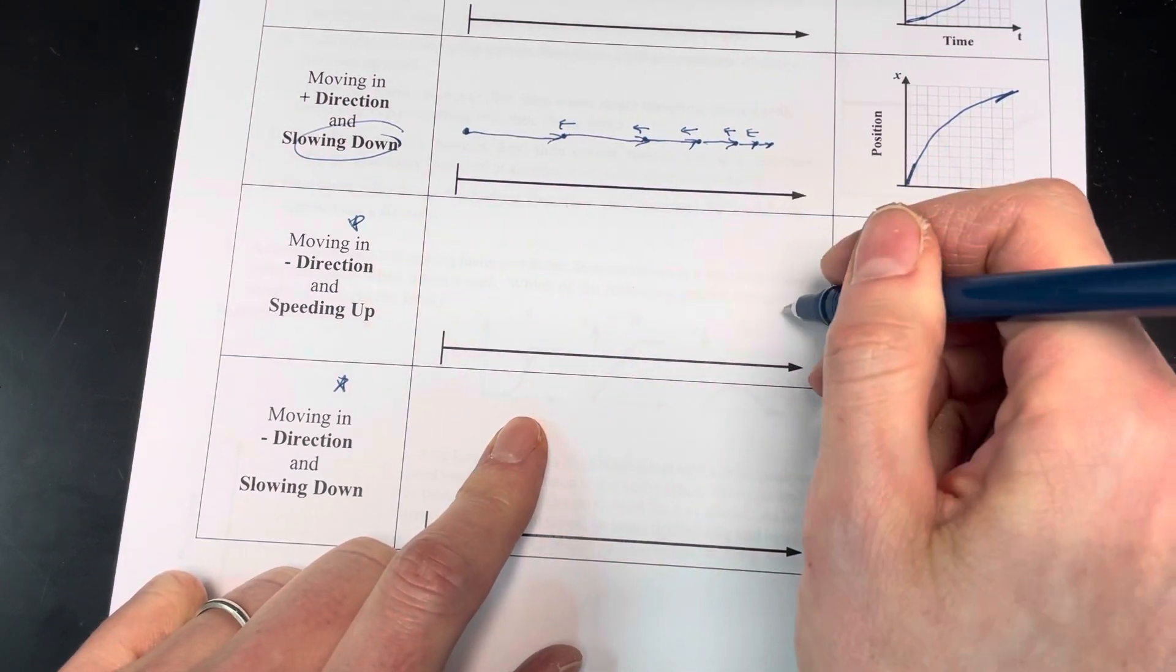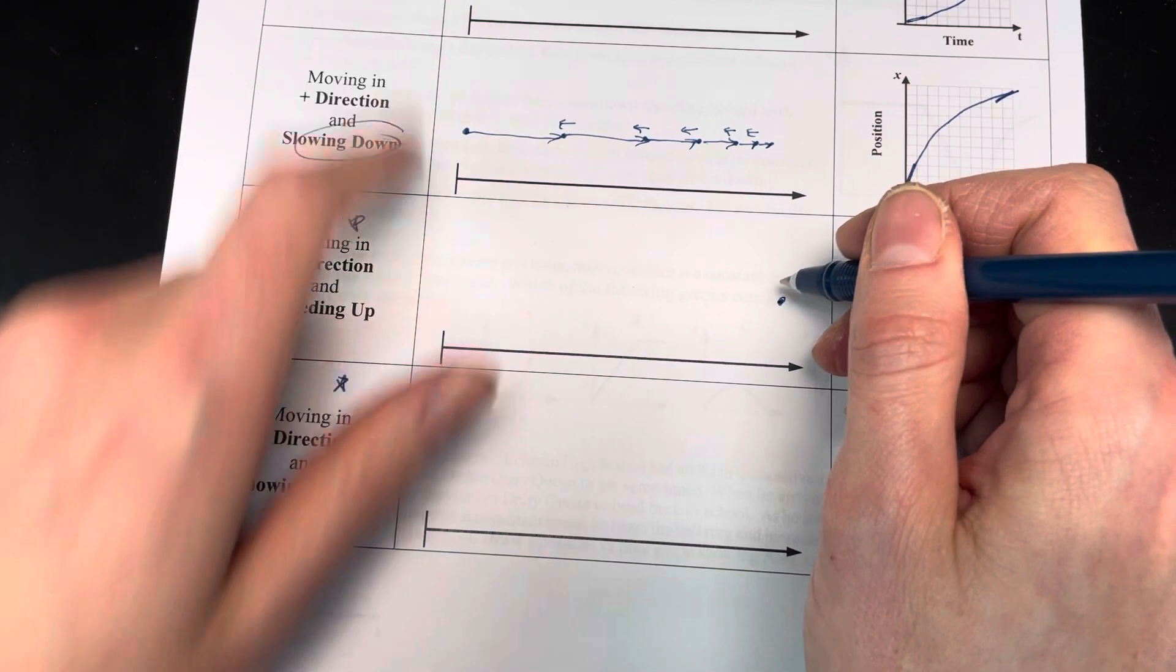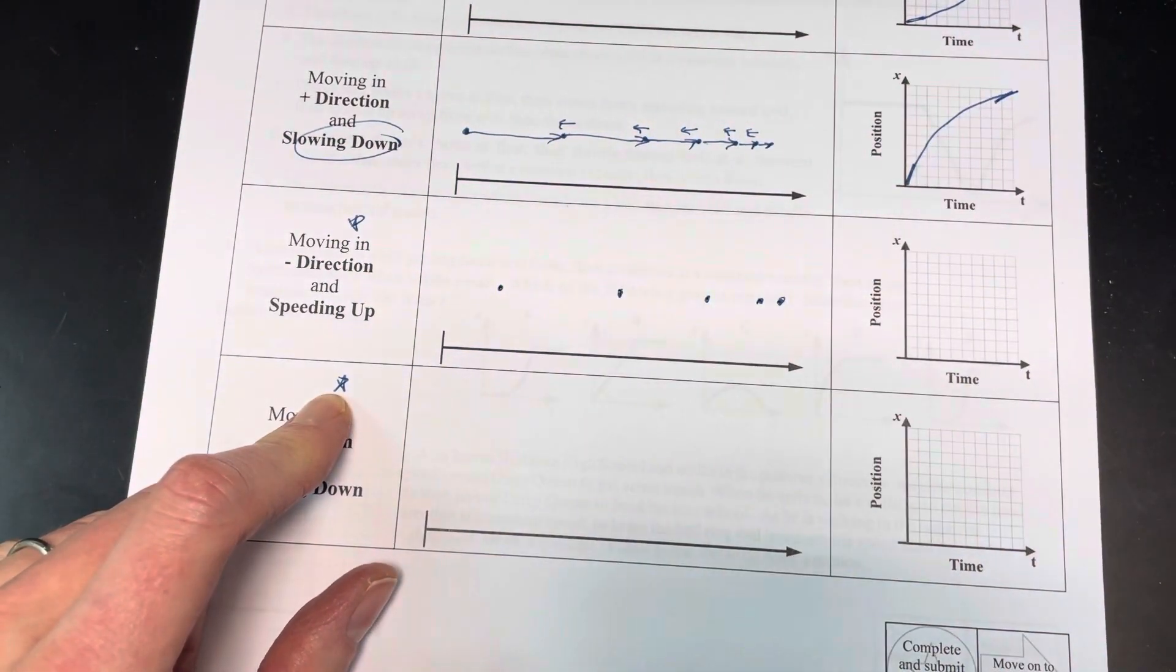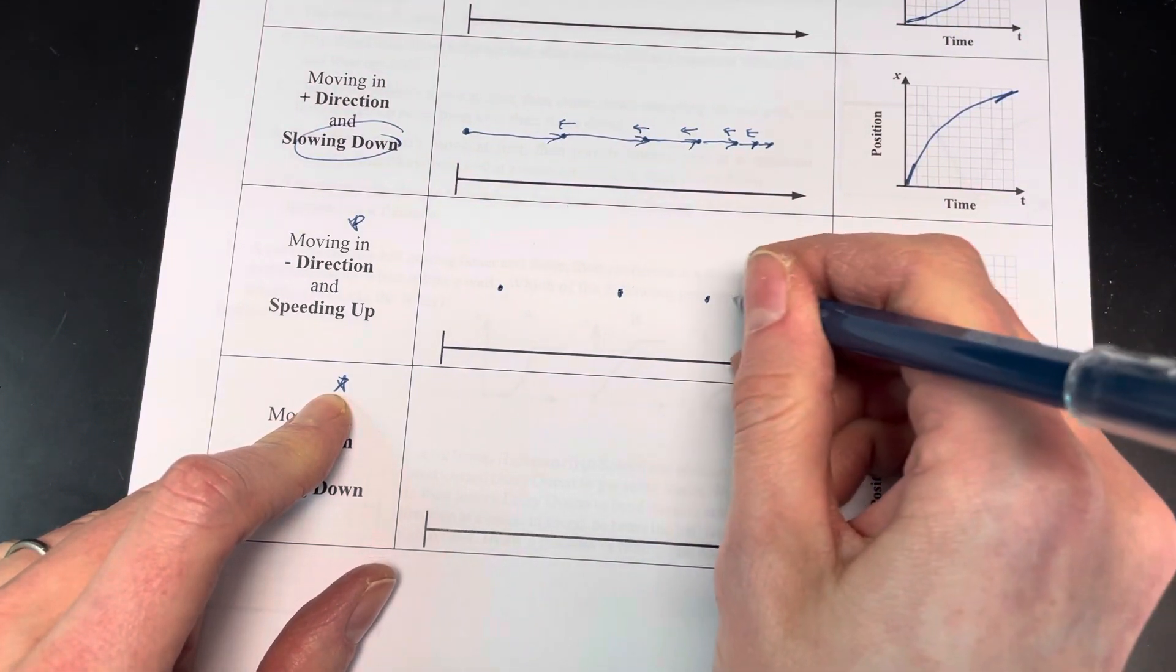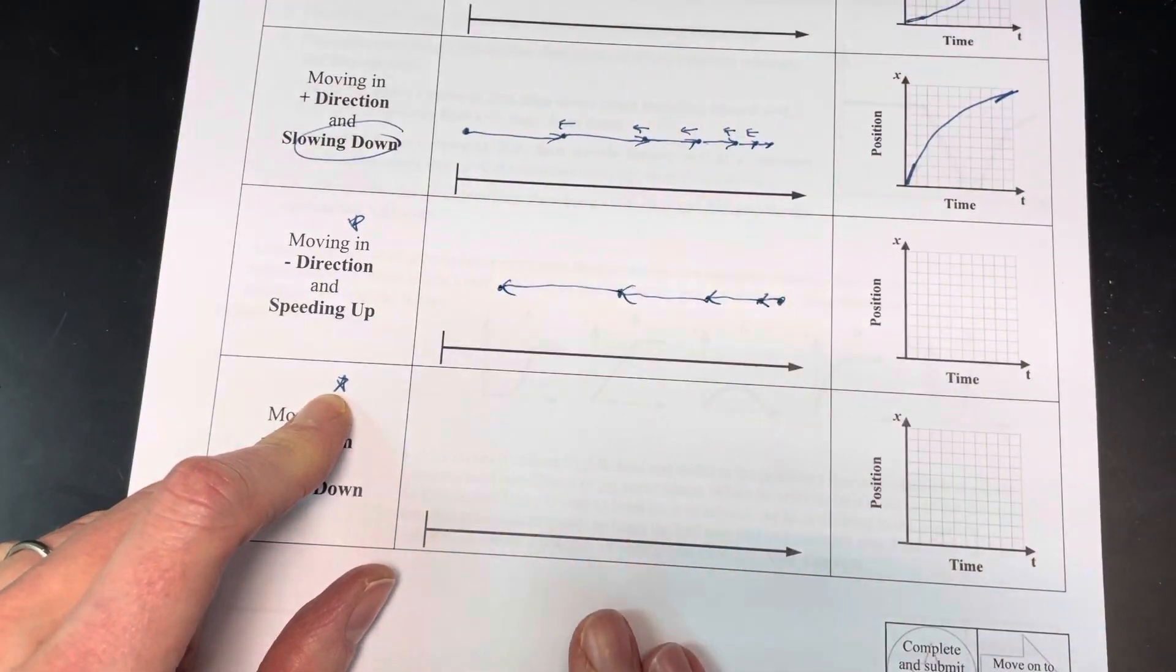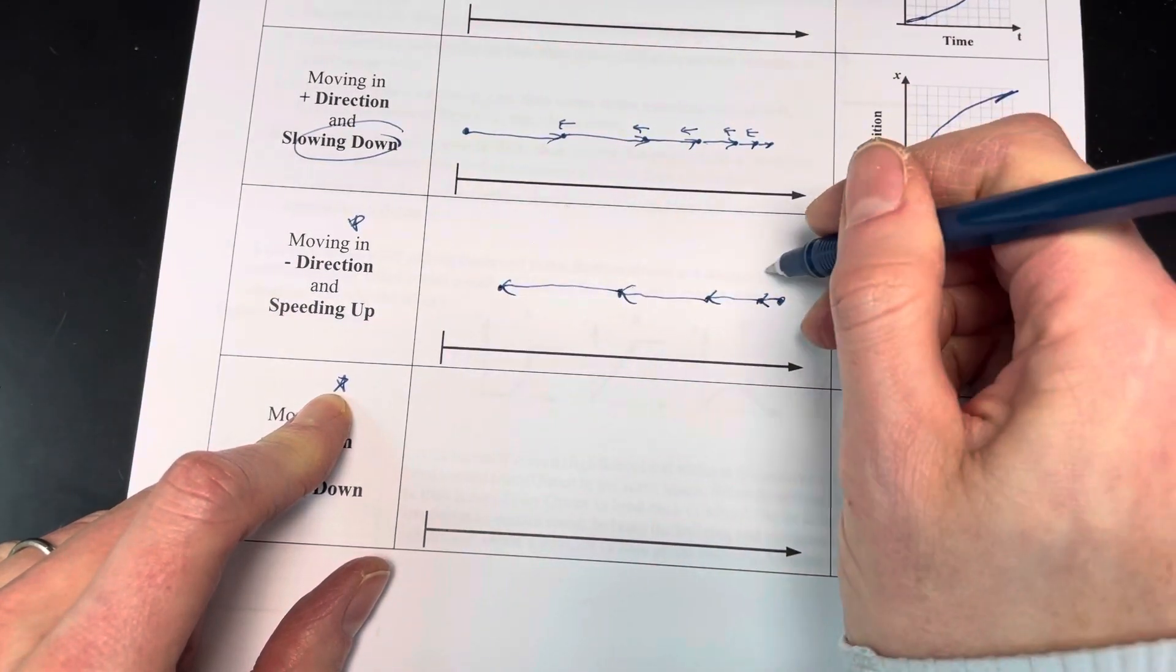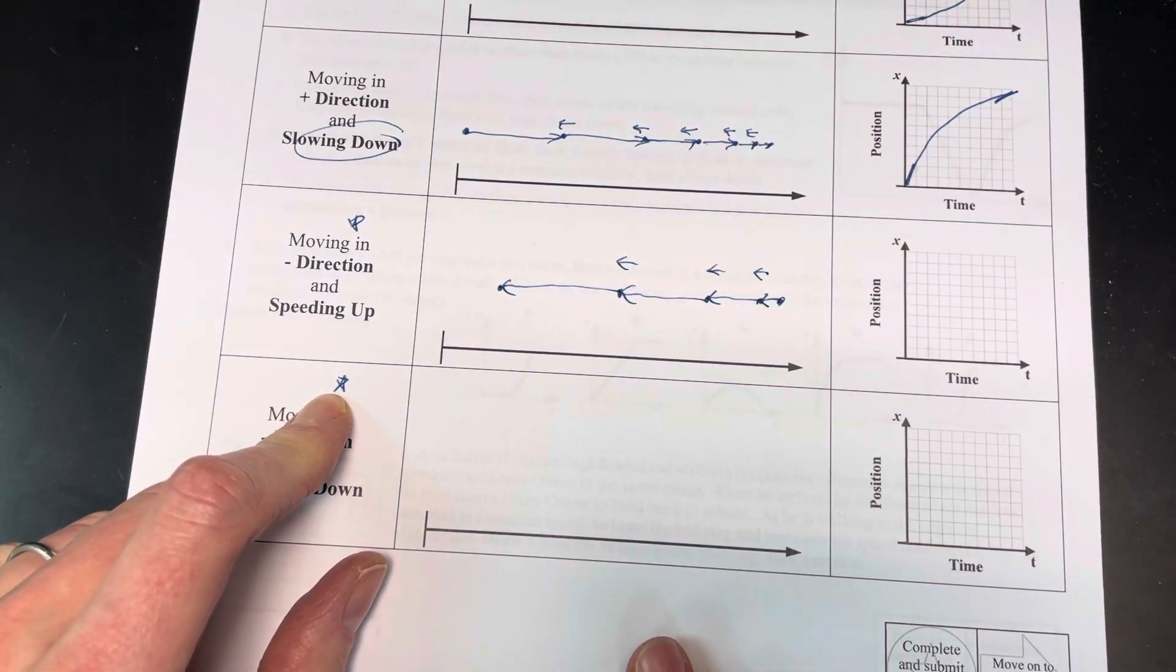If I'm going in the negative direction, I've got to start over here. I'm speeding up, so it's going to look like this one, but going the other direction. I'm going to get my dots farther apart. If I move my hand, you can see them getting farther apart. I'm going in the negative direction, so my arrows have to point in the negative direction. To get my object going faster that way, I have to push it that way, so my arrows are going to point in that direction like that.